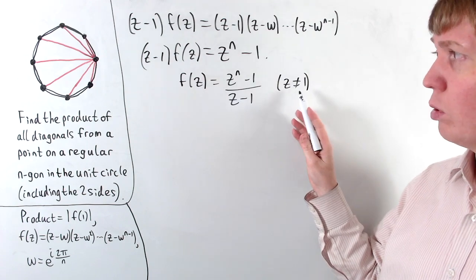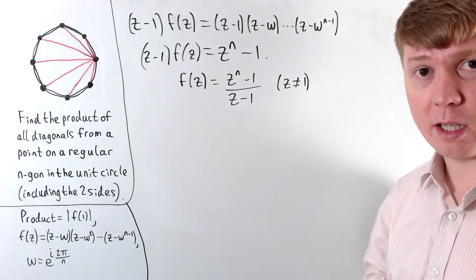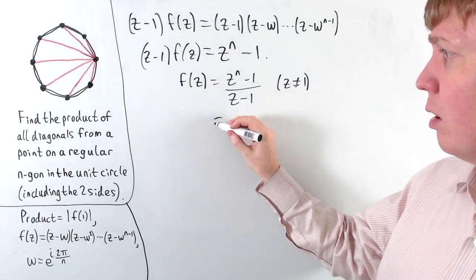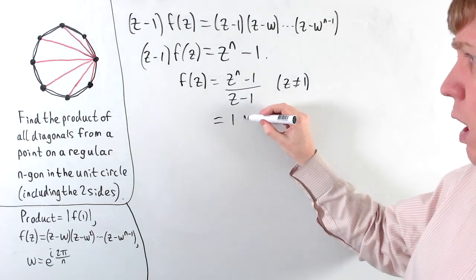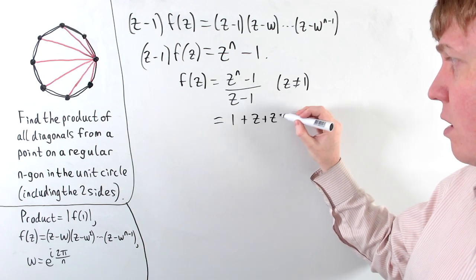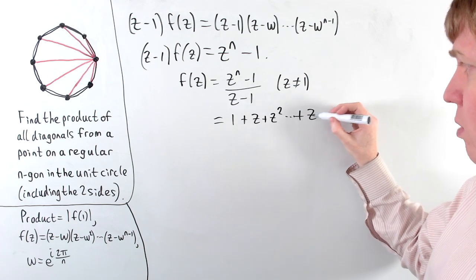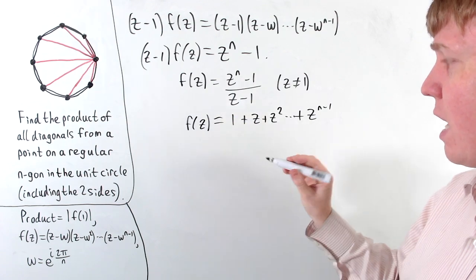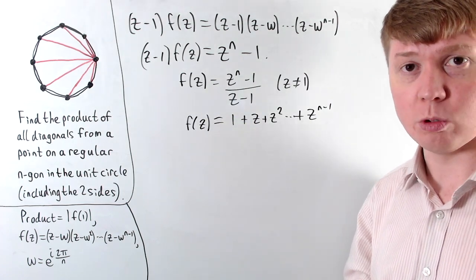Because you'll see this is actually the partial sum formula for a geometric series. So we can write this as 1 plus z plus z squared, and so on, up to z to the n minus 1. So we get this expression for f of z, at least when z isn't equal to 1.